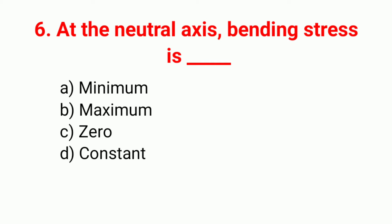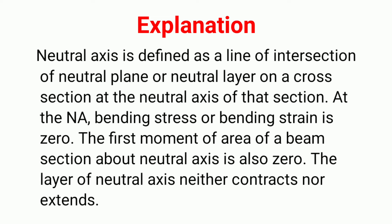Question 6: At the neutral axis, bending stress is — your right answer is option C, zero. Explanation: the neutral axis is defined as the line of intersection of the neutral plane on a cross section. At the neutral axis, bending stress and bending strain are zero. The first moment of area about the neutral axis is also zero, and the layer at the neutral axis neither contracts nor extends.